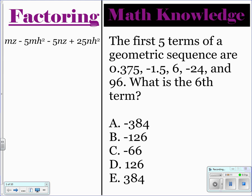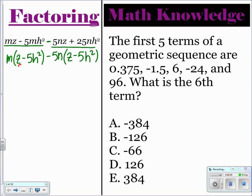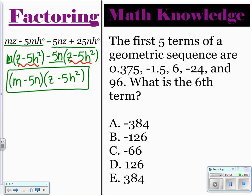So for this one, this is factoring by grouping. What you're going to want to do is factor these first two terms, then factor these next two terms. These first two terms only have an M in common, and if you pull that out, you have Z minus 5H squared left. Now for these next terms, we want to factor out this negative — they also have a 5N in common. So if you pull out a negative 5N, you're going to have Z minus 5H squared. The reason we wanted to factor out a negative was so that these pieces in our parentheses were the exact same thing. So if we have the exact same thing in our parentheses, Z minus 5H squared, what we can do is say M minus 5N. That is how this would factor — that's called factoring by grouping. We may not have gone over that before, but we'll do more of them throughout the year.